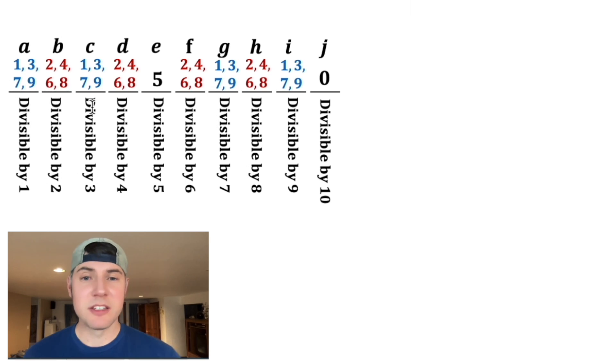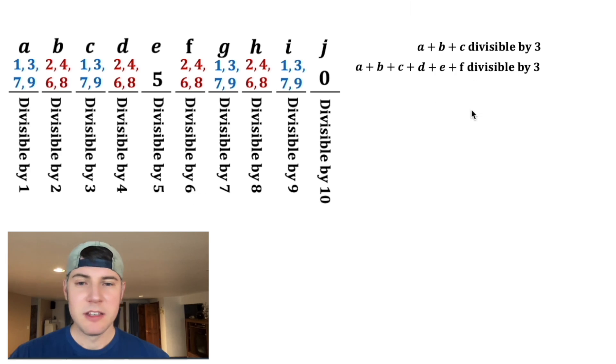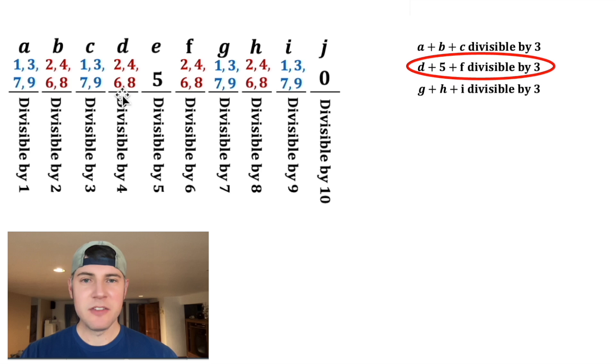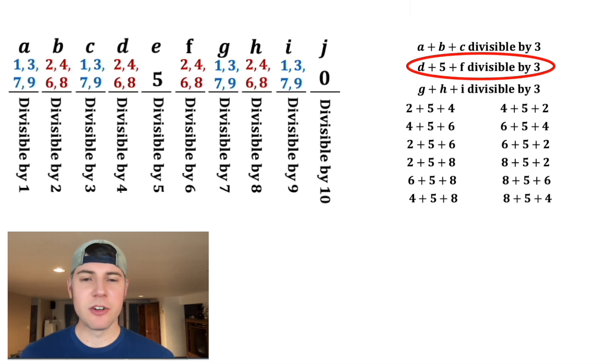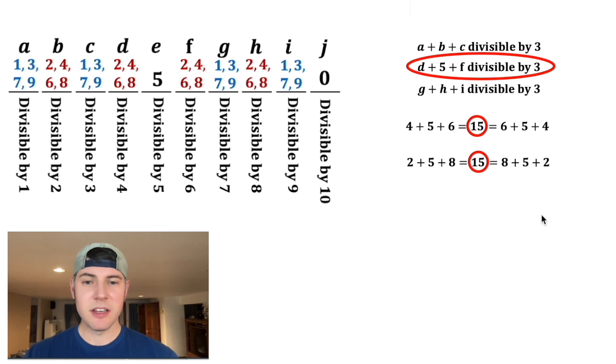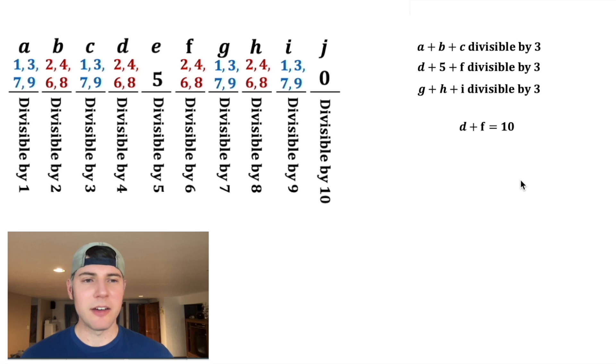In order for a number to be divisible by 3, the sum of the digits must be divisible by 3. And same thing for 6, they must also be divisible by 3. Since we know A plus B plus C has to be divisible by 3, it's enough just to say D plus E plus F is divisible by 3. And then the same logic applies to G plus H plus I. We already know that E is equal to 5, so D plus 5 plus F must be 15. Let's subtract 5 from both sides to get D plus F equals 10.